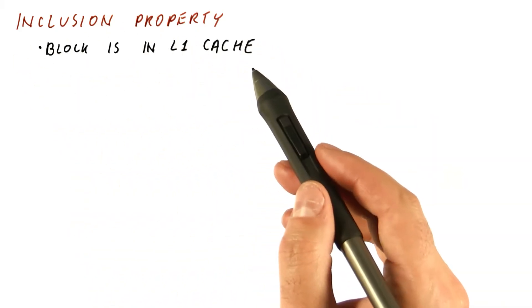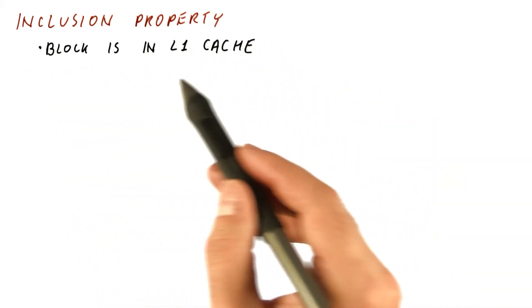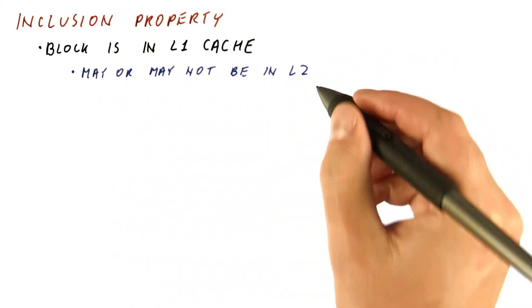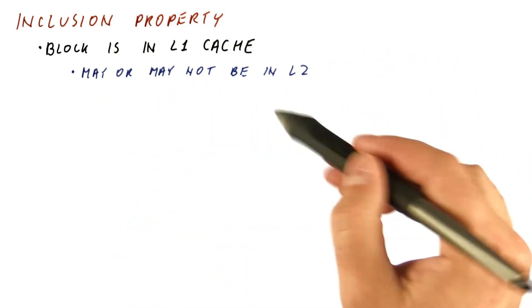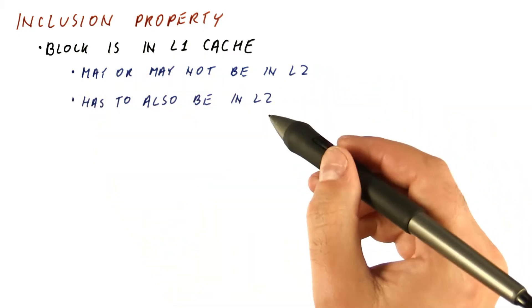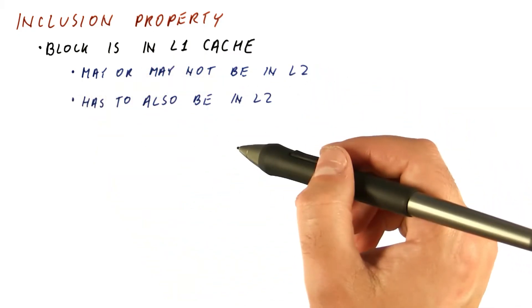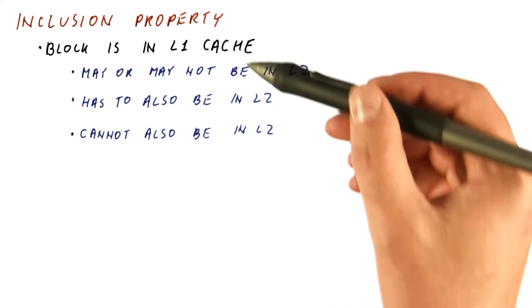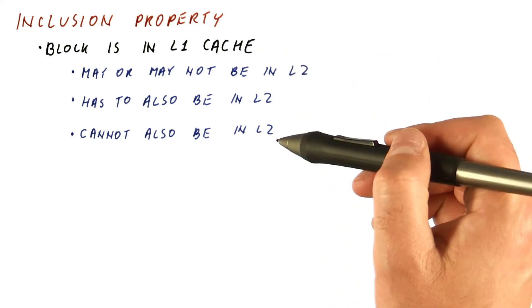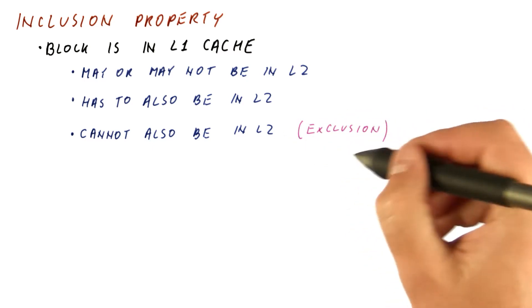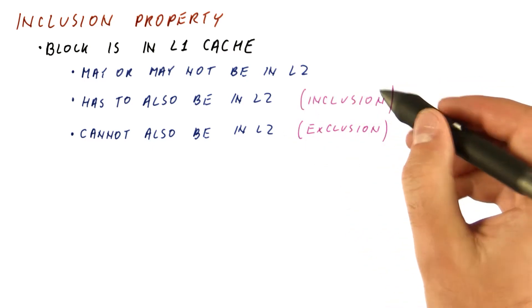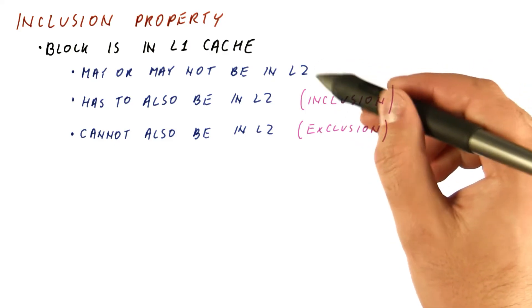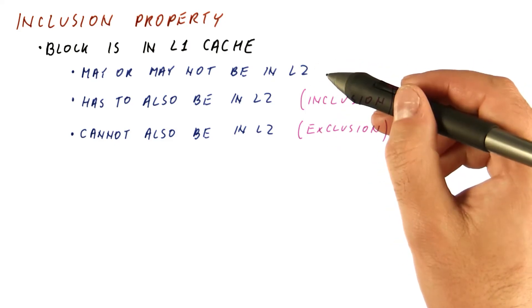The inclusion property has to do with assuming that the block is in level one cache. Is it that it may or may not be in the level two cache, or it has to be in the L2 cache? And it is also possible to make a system in which if a block is in L1, it cannot be also in L2. This is often called exclusion. This is what we usually call inclusion. And this doesn't have a name - it's neither exclusion nor inclusion.